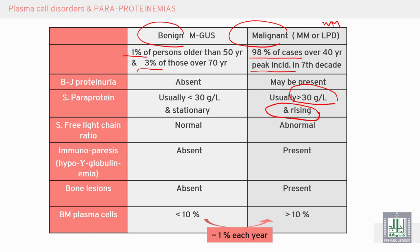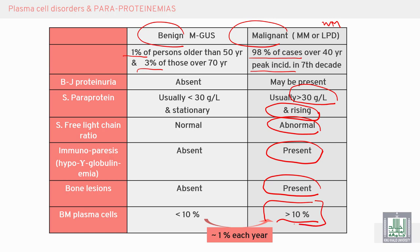Serum free light chains are abnormal in malignant disease — either kappa or lambda — while in MGUS both kappa and lambda maintain a normal 2:1 ratio. Immunoparesis is present in malignant disease due to monoclonal gammopathy, while in MGUS there is no immunoparesis. Bone lesions are present in malignant disease but absent in MGUS. Plasma cells in the marrow exceed 10% in malignant disease and are less than 10% in MGUS.